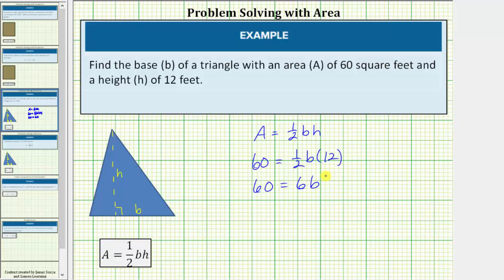Now we have a one-step equation. 6B means 6 times B. Therefore, to solve for B, we need to undo this multiplication by dividing both sides by 6.